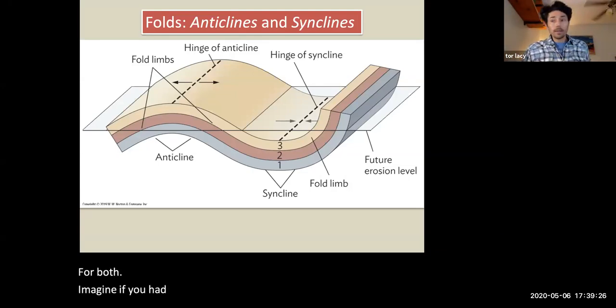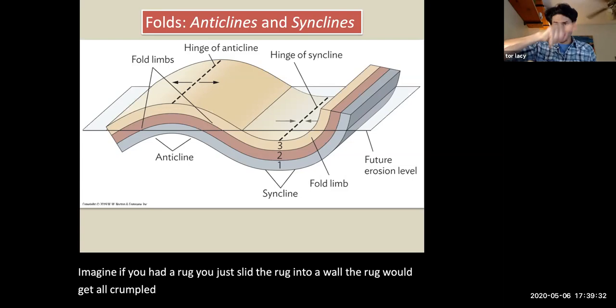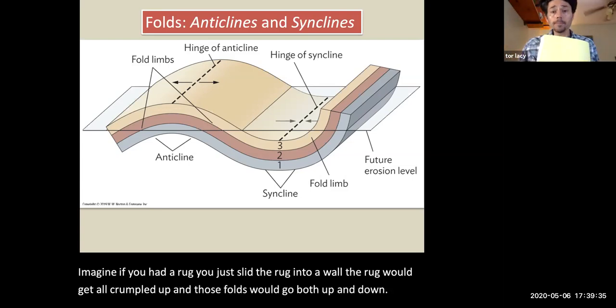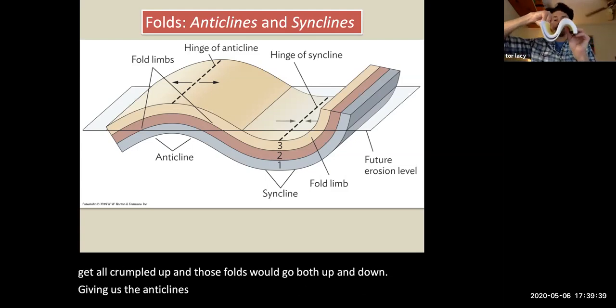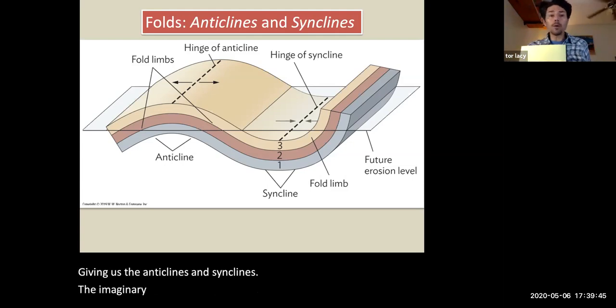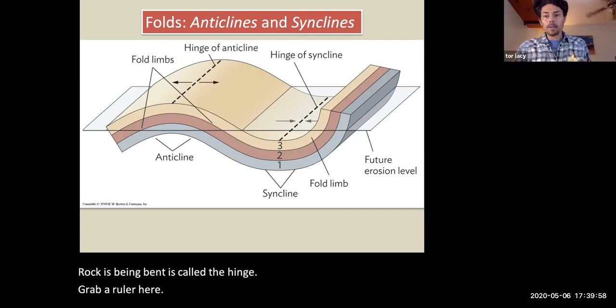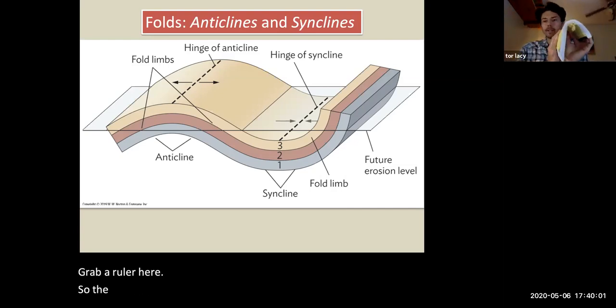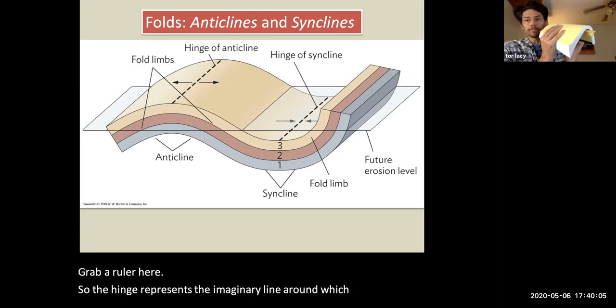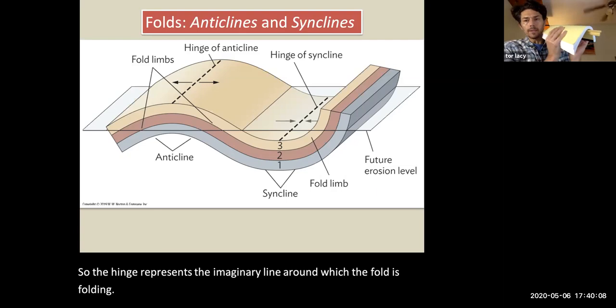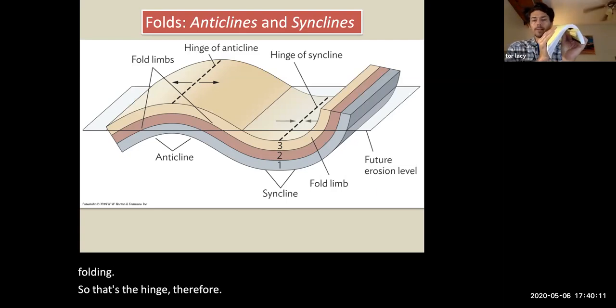Imagine if you had a rug and you just slid the rug into a wall, the rug would get all crumpled up. And those folds would go both up and down, giving us the anticlines and the synclines. The imaginary line around which the rock is being bent is called the hinge. So the hinge represents the imaginary line around which the fold is folding.